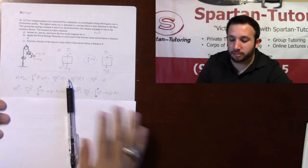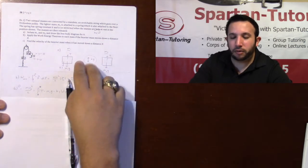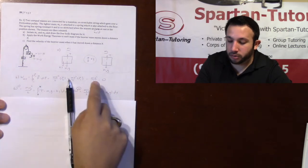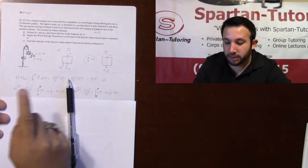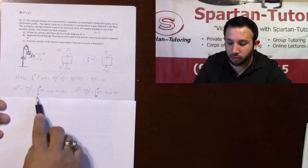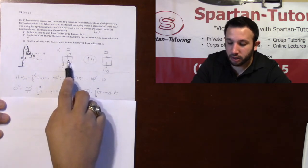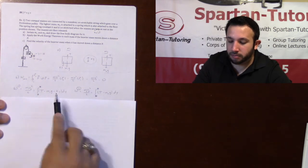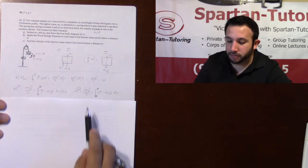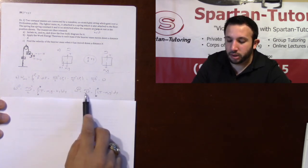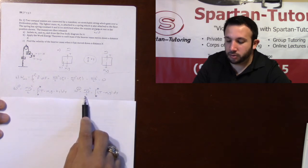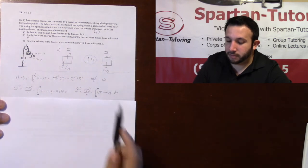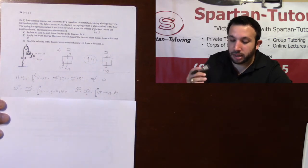Your net work, which is mv squared over two: you have m1 v squared over two equals the integral from zero to h of all your forces—T minus m1g minus k times y. For block two, your m2 v squared over two equals h to zero of your T minus m2g.